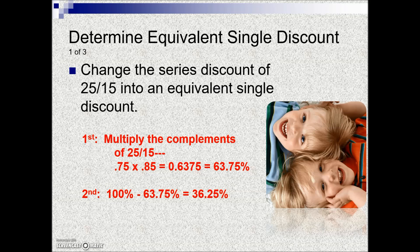The second step is to find the complement of this product, because 63.75% is what they're actually paying. Subtracting that from 100% gives us the single discount equivalent. So for a business offering a 25/15 series discount, they could have just as well listed it as 36.25% off.